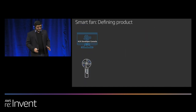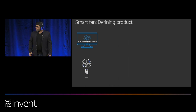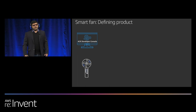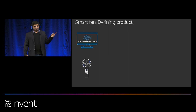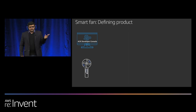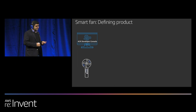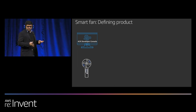Now let's make a fan. Here we have a simple non-connected fan with three controls: you can turn it on and off, you can set the speed to low, medium, and high, and you can set the rotation on and off.